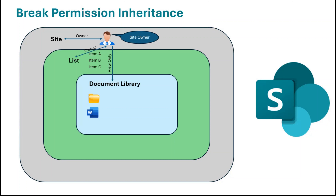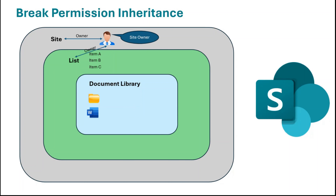He can modify the site content and delete the site, he can modify the list and its items, but he will not be able to modify anything within the document library. We can also break inheritance between a site, a list, and its items — for example, assigning edit permission on a list but view-only permission on specific folders or files. When a site, list, or document library uses the same permissions as defined at the site level, this is called permission inheritance. When we assign unique permissions on a list or document library, this is called breaking permission inheritance.